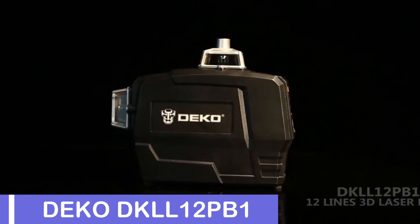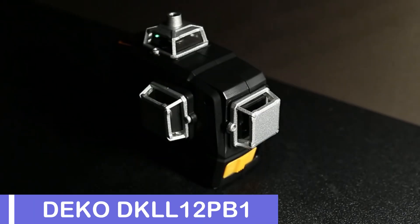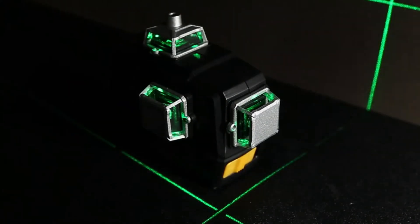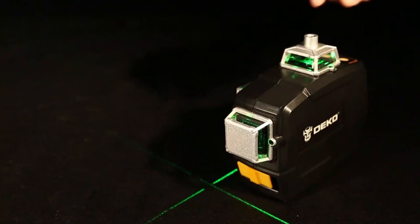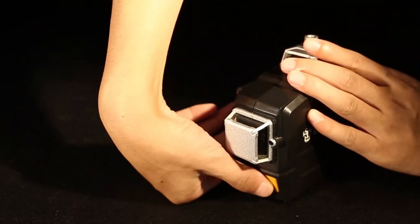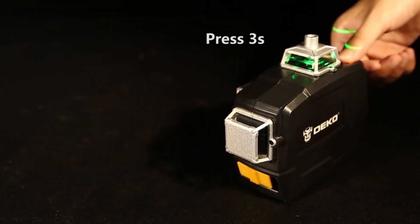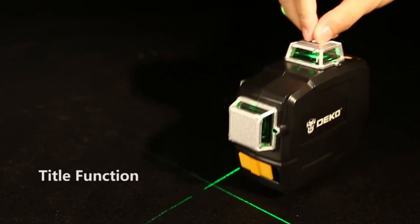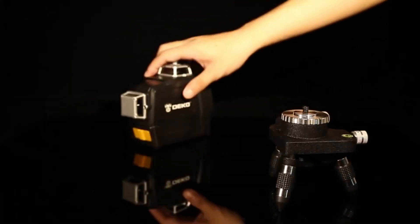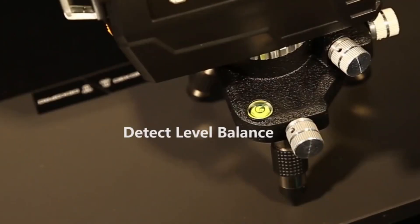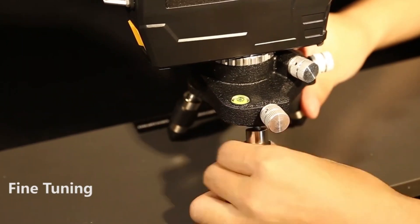Number 3, Deko DKLL-12PB1 Laser Level. The Deko DKLL-12PB1 Laser Level is renowned for its exceptional precision, boasting a wavelength of 505 nm to 532 nm, and a ±1 mm at 7 m precision level. Its 12-line measurement model offers a wide range of reference lines, making it suitable for various applications. The laser level is classified as a Class II laser, ensuring safety and high visibility. Its impressive working range of 20 m to 30 m makes it suitable for various projects, from home renovations to larger construction tasks.